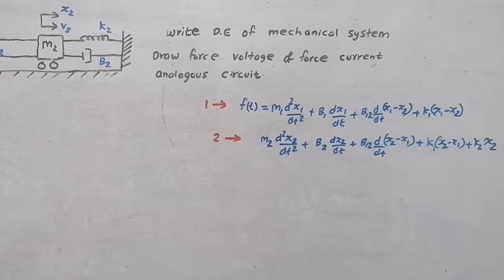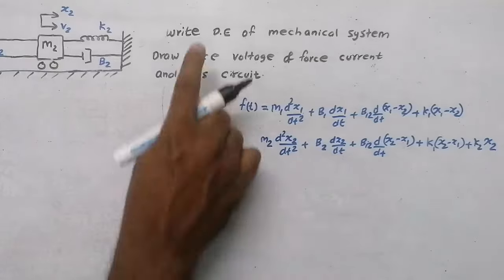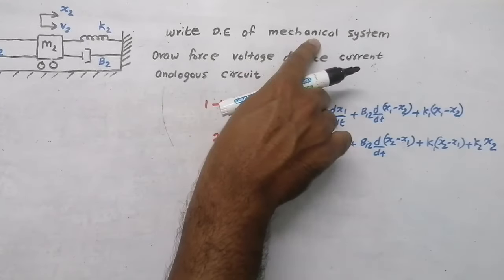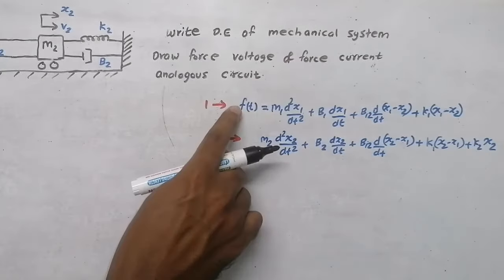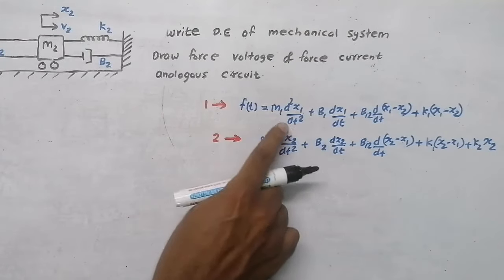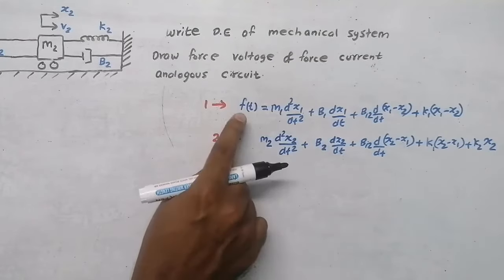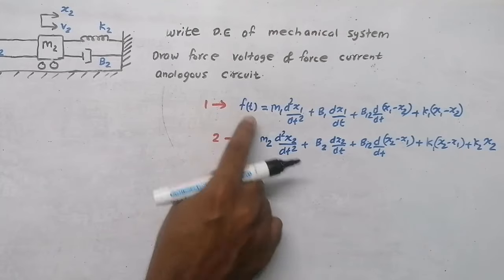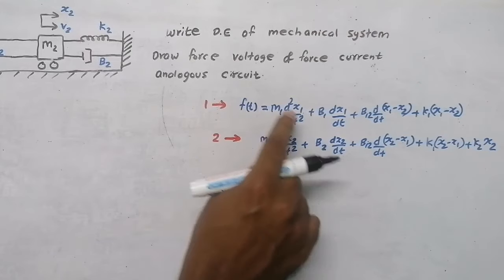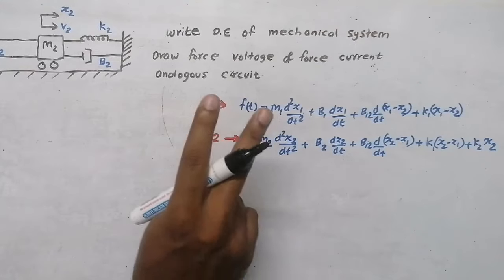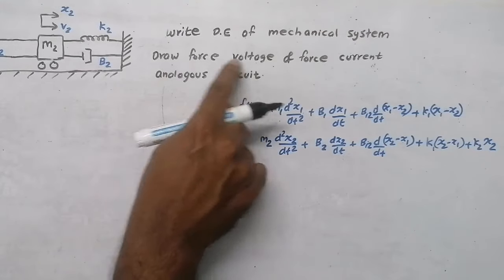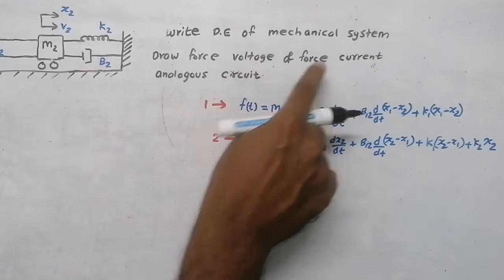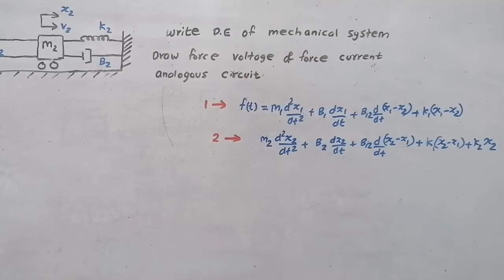Our first part is complete — we wrote the differential equations of the mechanical system. The expressions d/dt·(dx/dt) confirm these are differential equations. Now the second part: we need to draw the force voltage and force current analogous circuits.